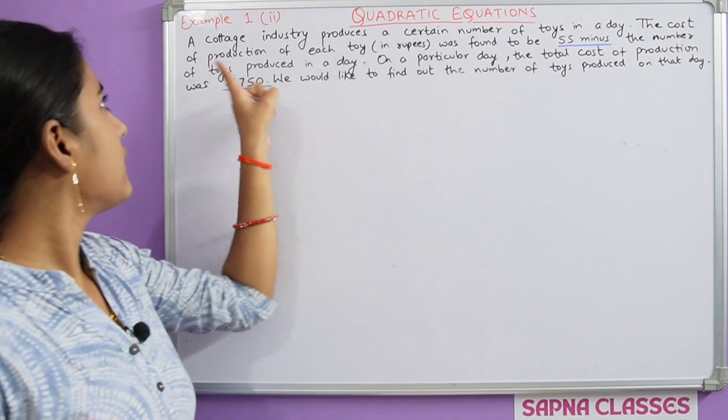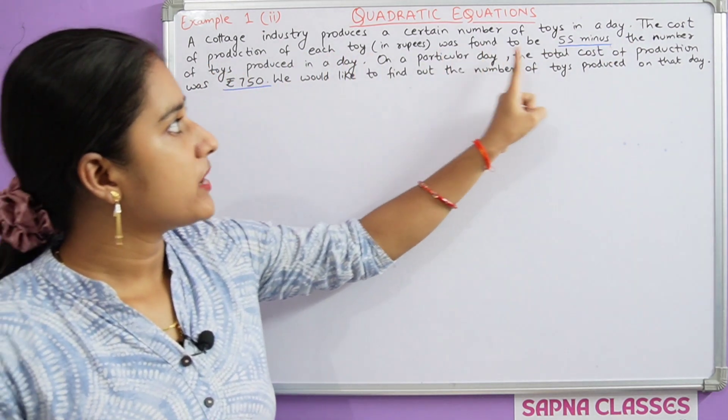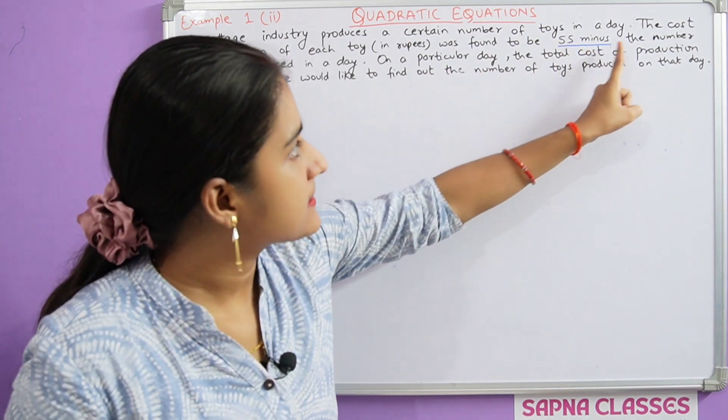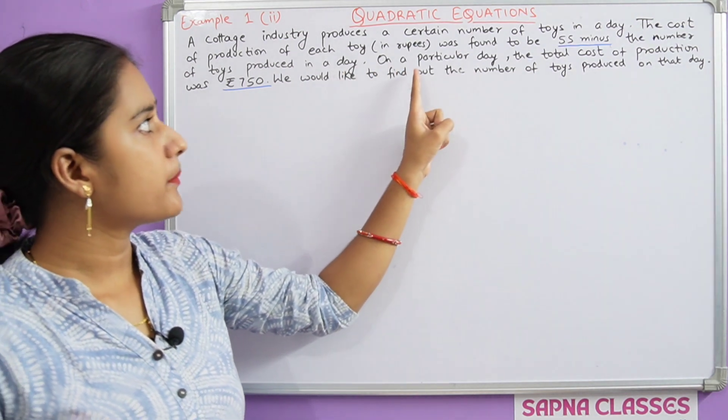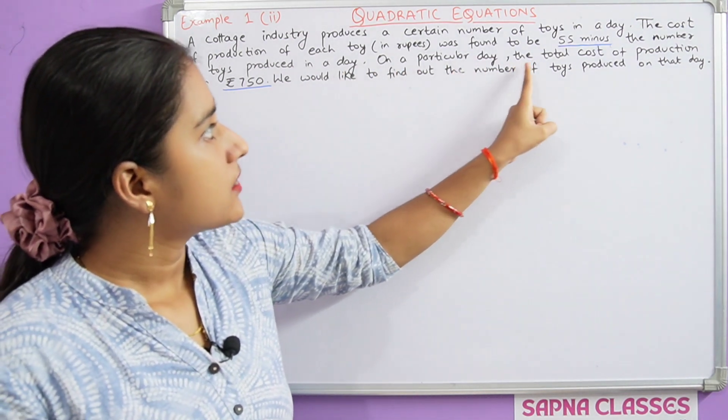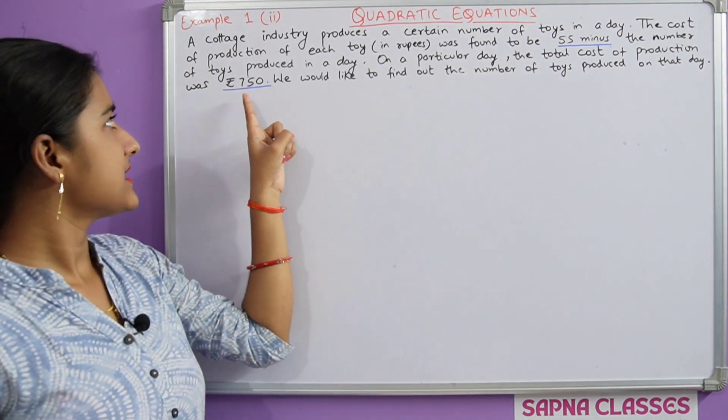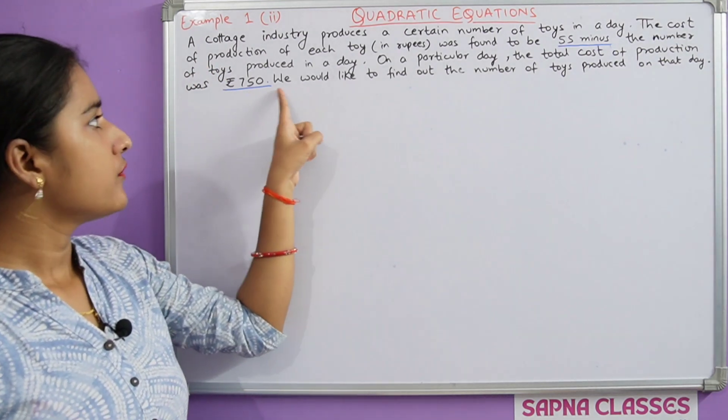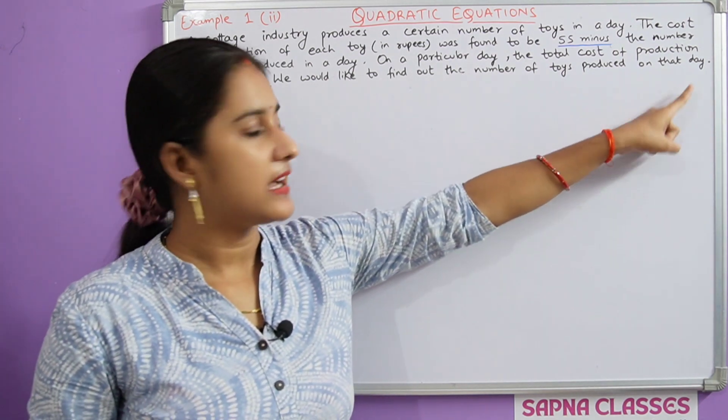The cost of production of each toy was found to be 55 minus the number of toys produced in a day. On a particular day, the total cost of production was Rs. 750. We would like to find out the number of toys produced on that day.